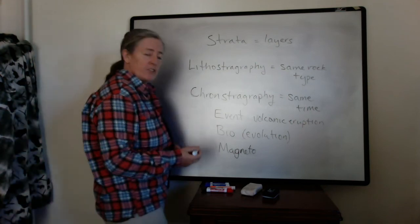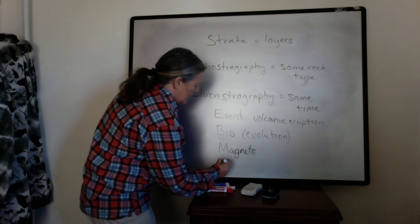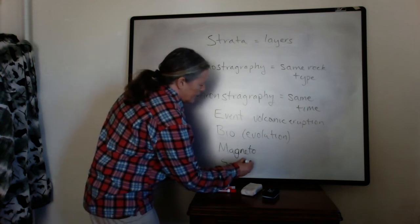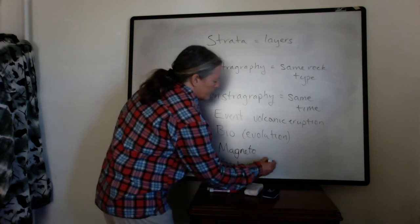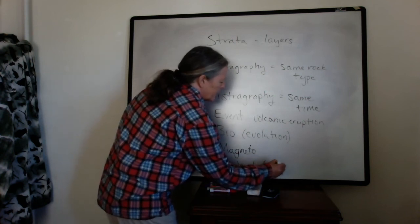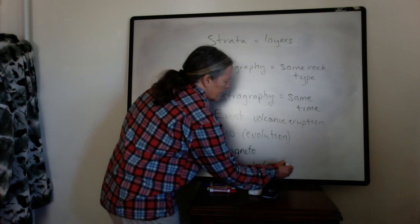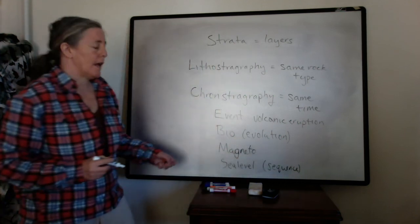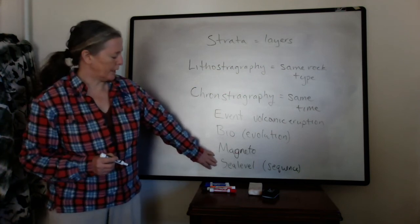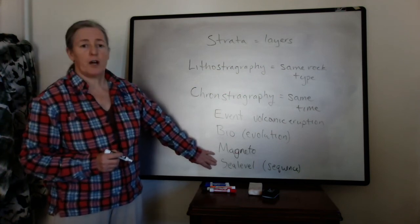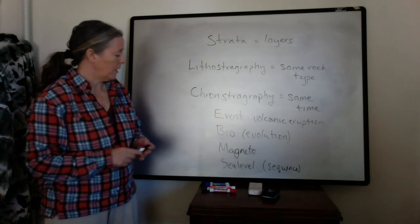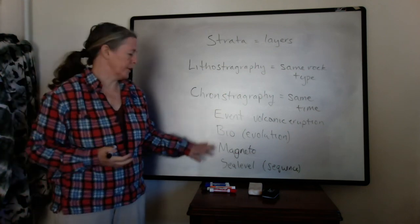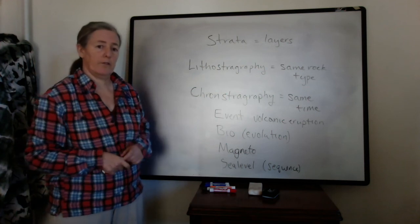And then we can also use sea level changes, which are really useful. And we actually call this sequence stratigraphy. This is one of the most powerful tools for correlating environments through time. It uses Walther's Law and concepts of stratigraphy to be able to reconstruct large parts of Earth history.